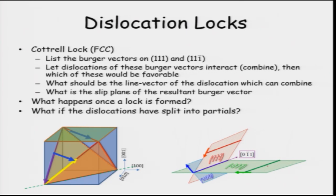Why do we call it a lock? Let us say this is one plane, this is another plane, and there is a dislocation coming all the way up to here. Once they are here, their Burgers vector is such that it cannot glide on either of these two planes. Now let us say more dislocations come — another dislocation comes and wants to go further, but once the lock is formed it gets obstructed. Similarly, another dislocation moving on this particular plane will come and get locked. Eventually there will be a pile-up of dislocations, meaning the dislocations cannot move further, and this leads to strengthening in the material. That is why these locks are so important.